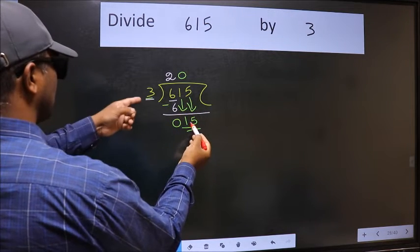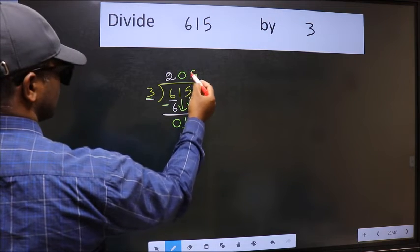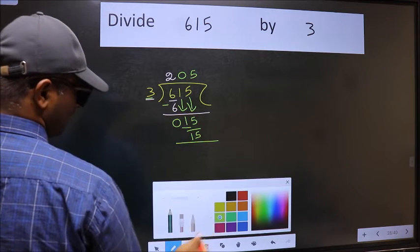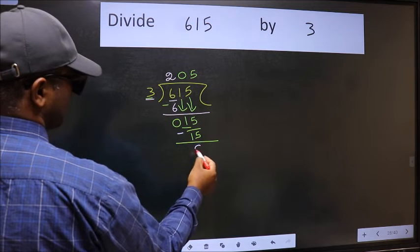Now 15. When do we get 15 in the 3 table? 3 times 5 is 15. Now we should subtract. We get 0.